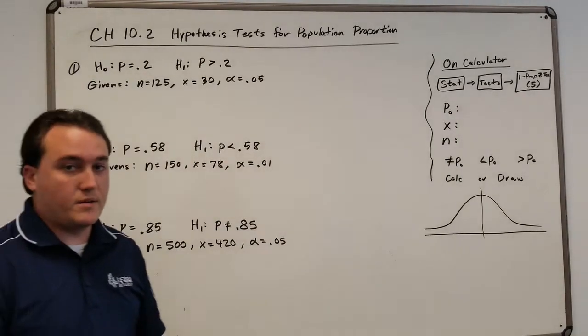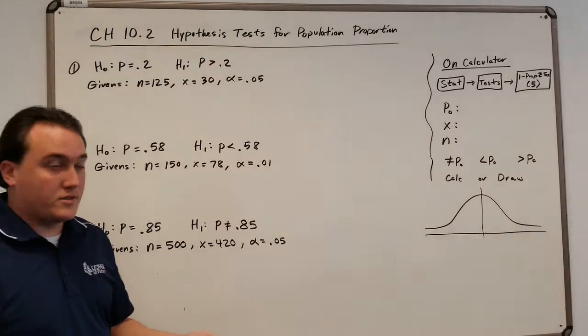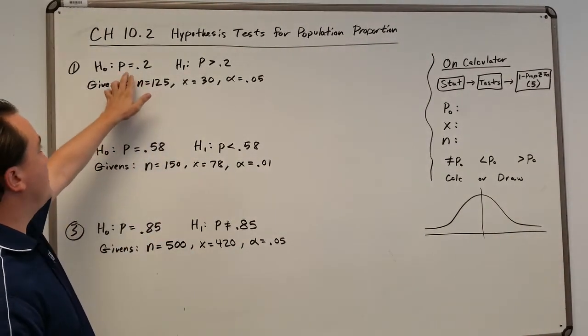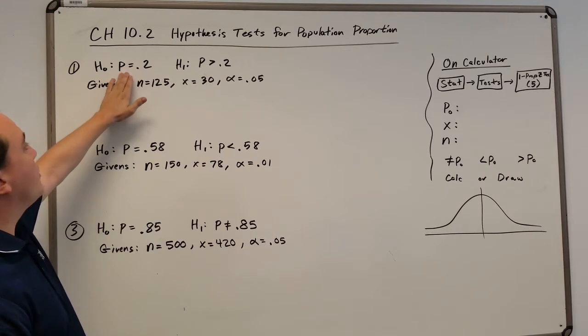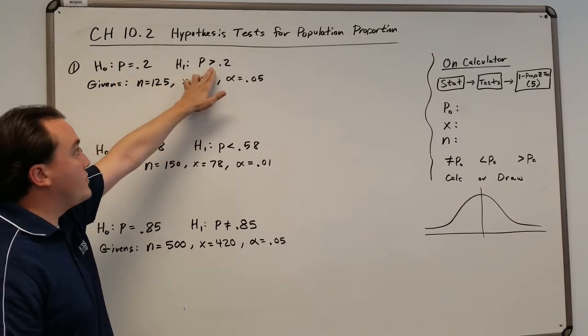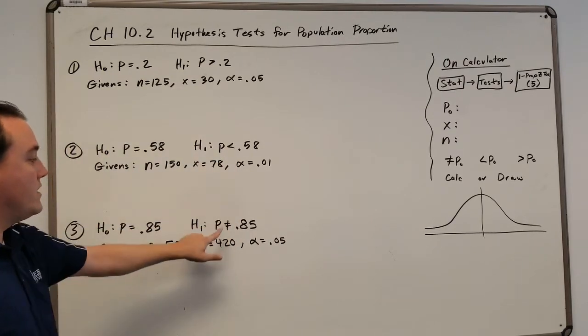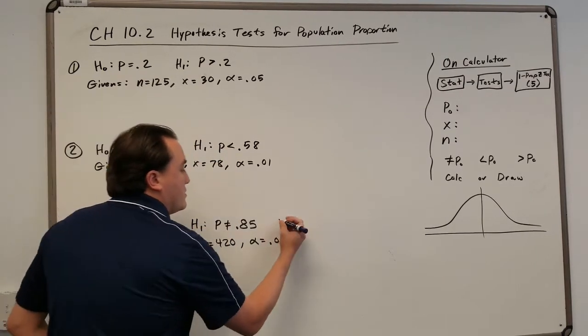All right, so here are three examples, and it goes through one-tailed tests, so the three types. You got the null hypothesis equals something, and then it's greater than, less than, and then not equal to. This is actually a two-tailed test.